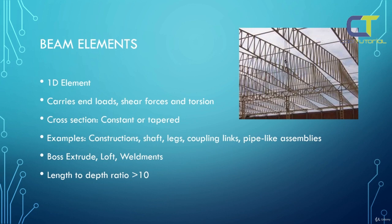A beam element is also a 1D element, but beam elements can carry axial loads, shear forces, and torsion, while truss elements can only carry axial loads. The cross section of an object treated as a beam can be constant or tapered, while with a truss element the cross section can only be constant.